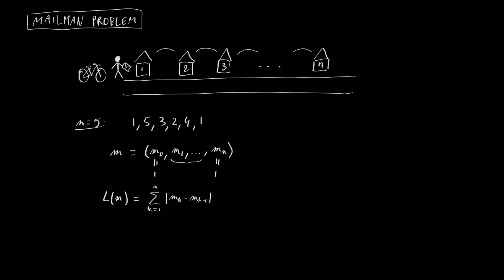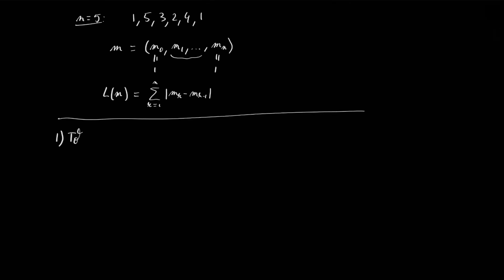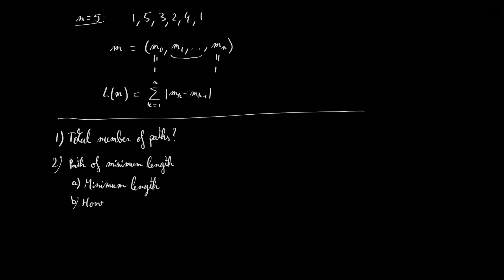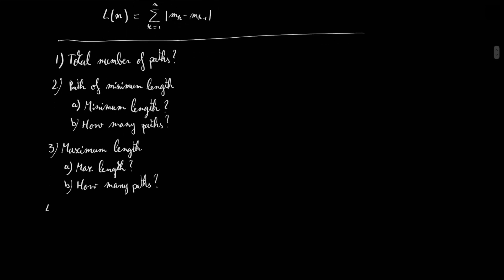This is because when the mailman is going from house mk-1 to house mk, the distance walked is exactly equal to |mk minus mk-1|. Now that the problem is defined, what we would like to know is: first, what is the total number of paths the mailman is able to walk? The second question is related to the path of minimum length — what is this minimum length, and how many paths have minimum length? The third question is about the maximum length of a path — what is it equal to, and how many paths achieve it? Finally, what is the expected value of the length of a path, assuming a uniform distribution among all possible paths?